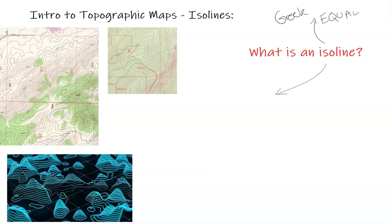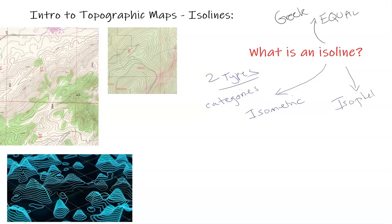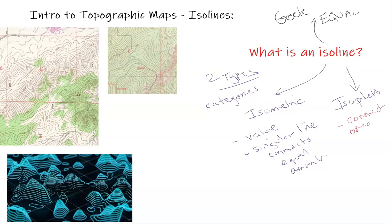There are two types of ISO line: isometric and isopleth. An isometric is a definitive or singular line that connects values of the same or equal amount — these are the more commonly used type. An isopleth, in contrast, connects areas of equal value but represents more of a larger zone rather than a single line.